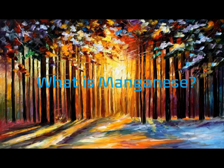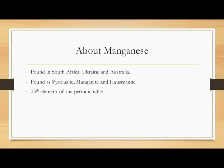What is manganese? Manganese is an earth metal that is most commonly found in South Africa, Ukraine and Australia. Manganese is found naturally as the ores pyrolusite, manganite and hausmannite.